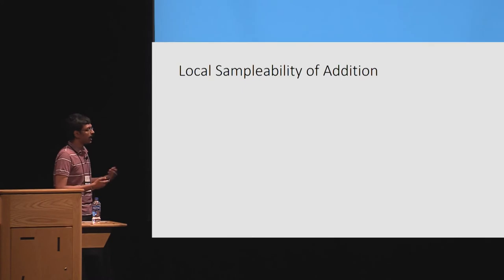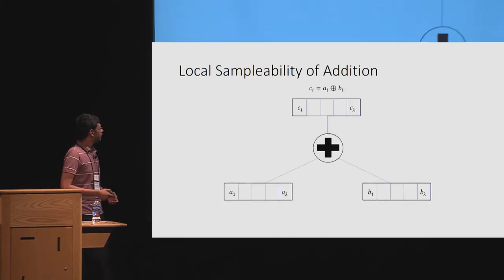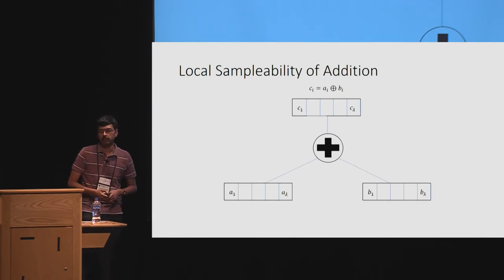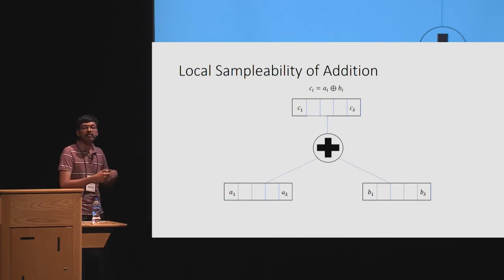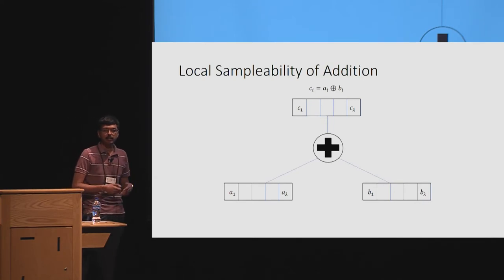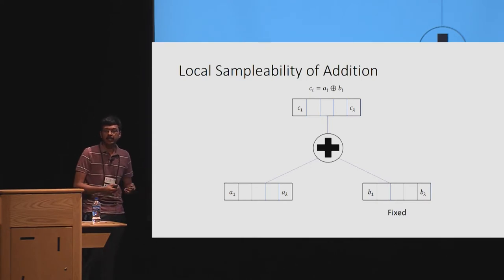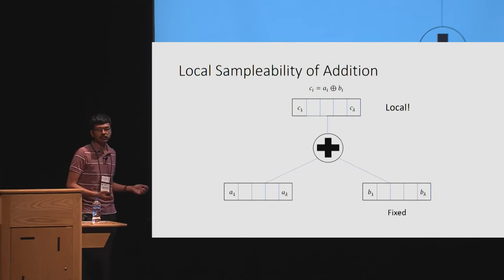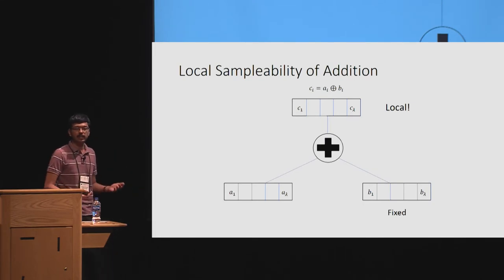For the addition gadget: recall it takes two bundles and outputs their bitwise XOR. Since we fix the second bundle and want to show the wires of the addition gate are a local function of the first bundle A, notice that the bitwise parity computation directly makes this a local function — we don't need to do anything extra. The wires of the addition gate are already a local function of bundle A.